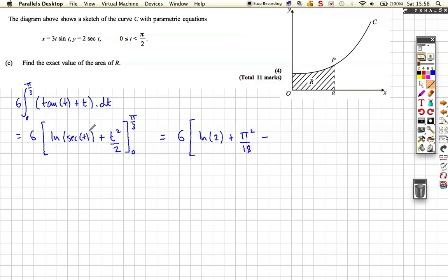Then when we put 0 in, sec of 0 is 1, so we get ln of 1, which we should know something about, and then when we put 0 into here, 0 squared is 0, so plus 0. Actually it should be a minus 0, but just when we do other questions, it's also a minus, minus 0. Okay, well we know that this becomes 0.